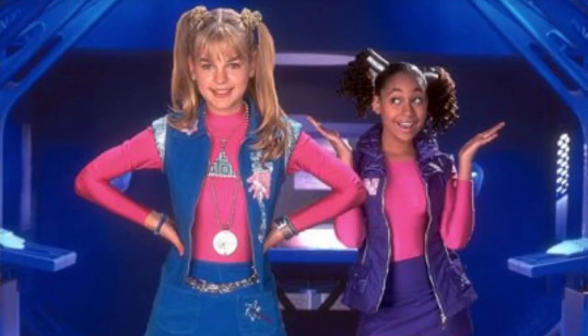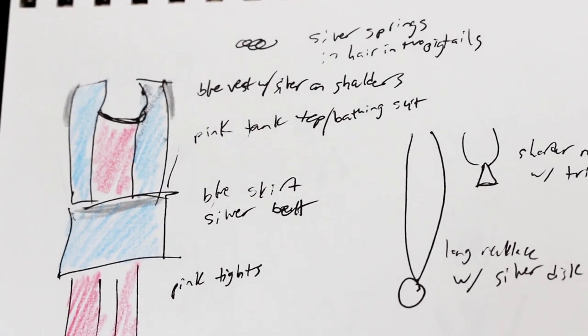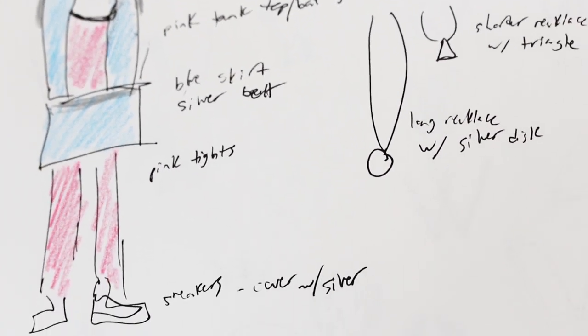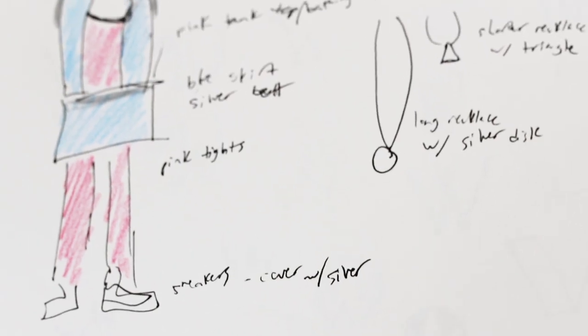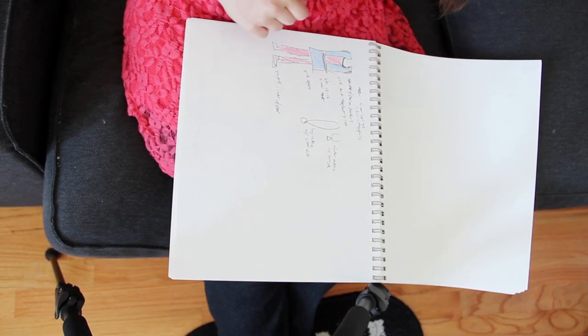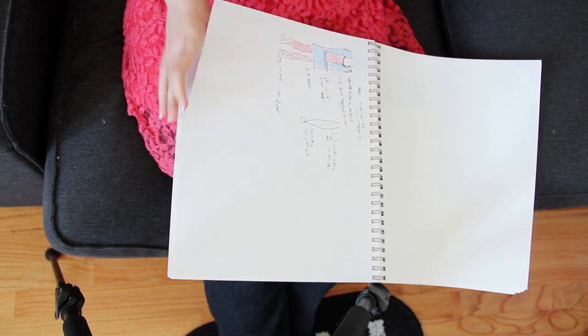And then we have a sketch of my Zenon Girl of the 21st Century costume that I wanted to make with like a blue skirt and pink tights and a pink tank top and a blue vest. And yeah, I kind of still want to make that costume.